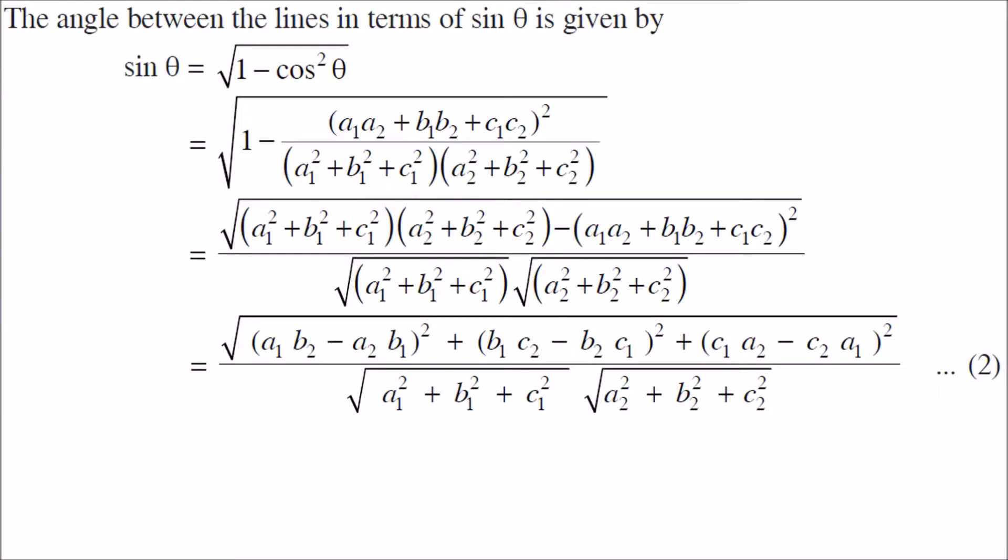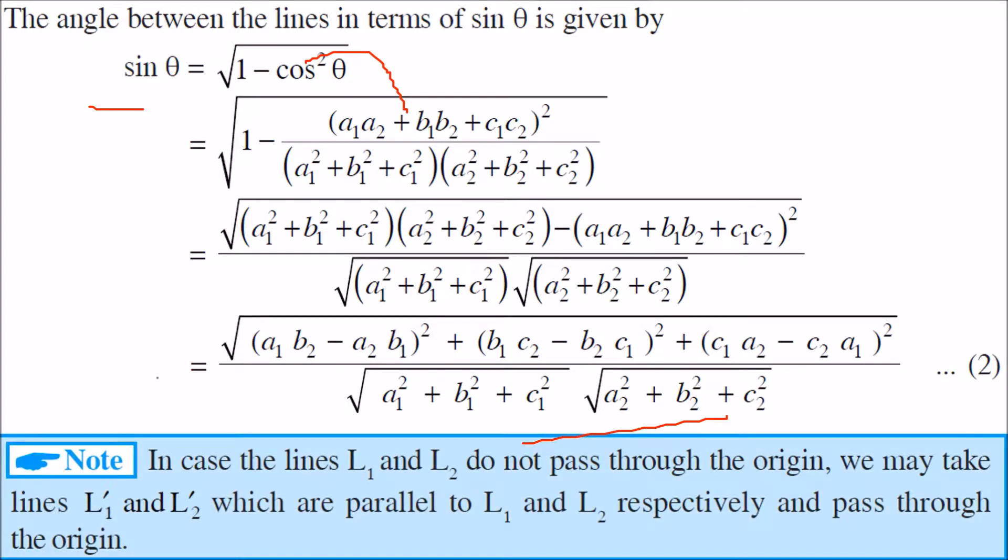The angle between the lines in terms of sin theta: we know that sin square theta plus cos square theta equals 1, so sin theta equals under root 1 minus cos square theta. Just place cos here and solve it; this will be the equation.